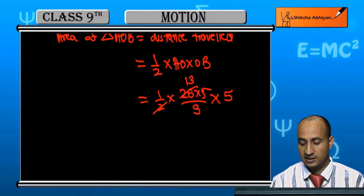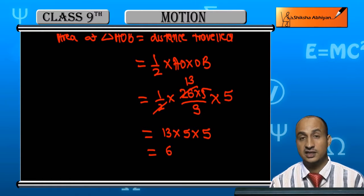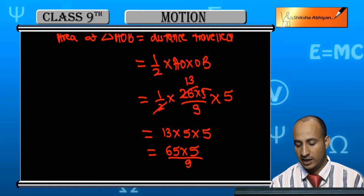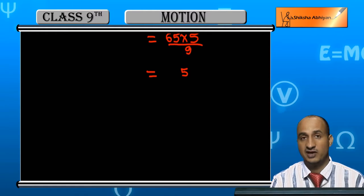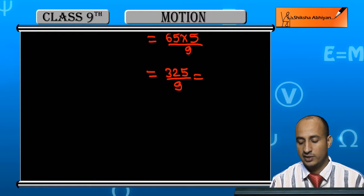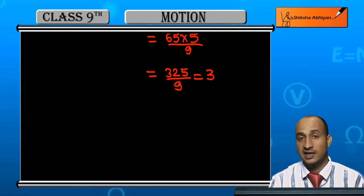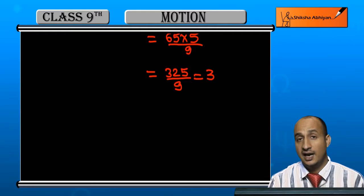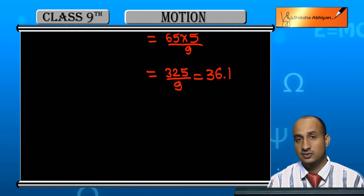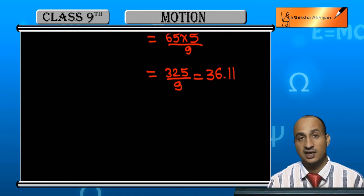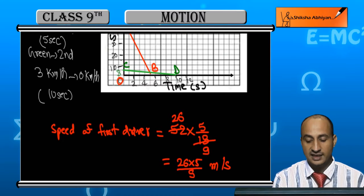This works out to 13 times 5 times 5, which is 65 times 5 by 9. Carrying out the calculation: 25 upon 9 — when you divide, 9 into 27 gives 3, then 9 into 54 gives 6, and so on. This gives us the distance traveled by the first driver. Now for the second case, we find the area of triangle COD.